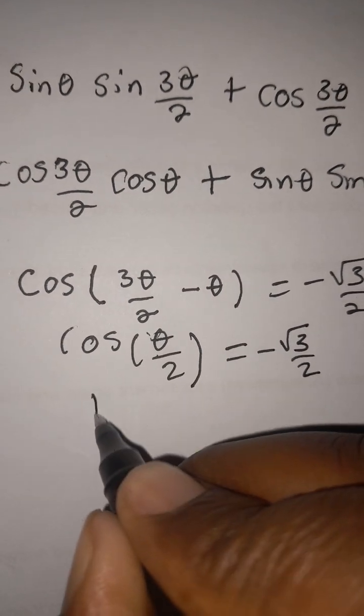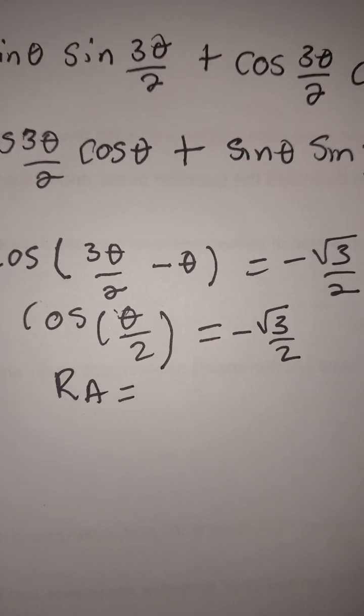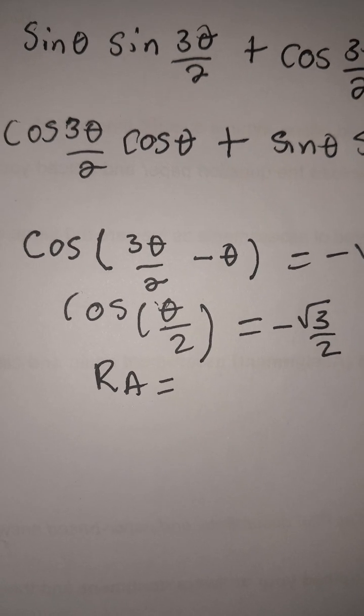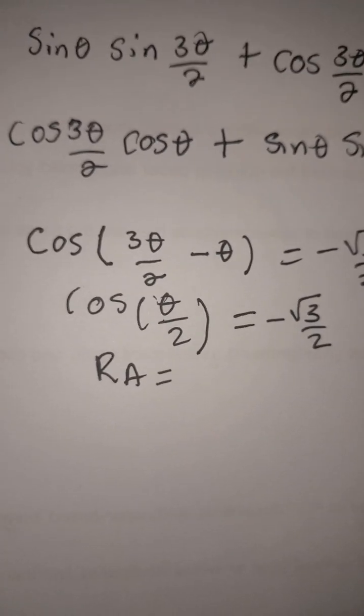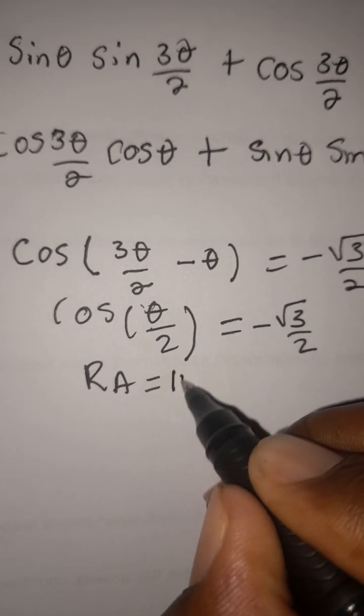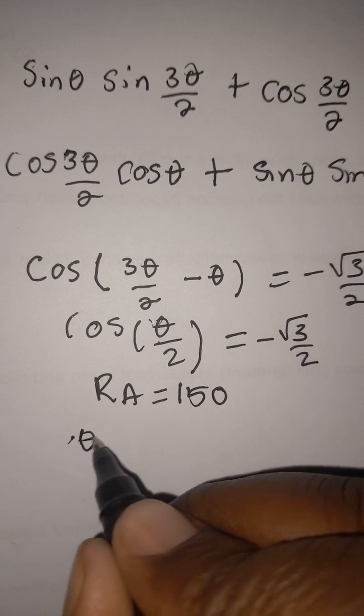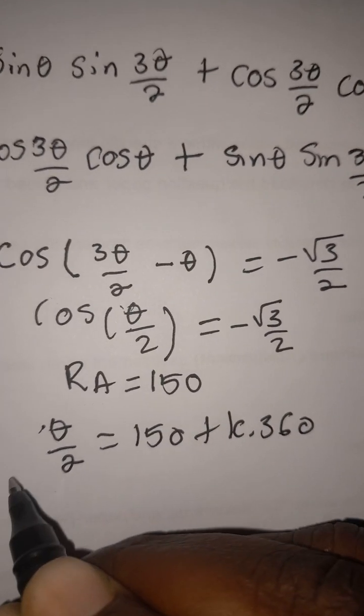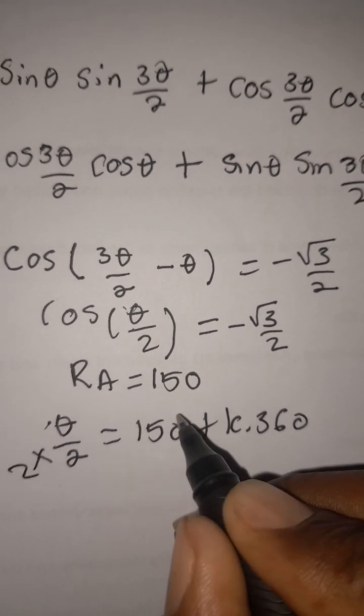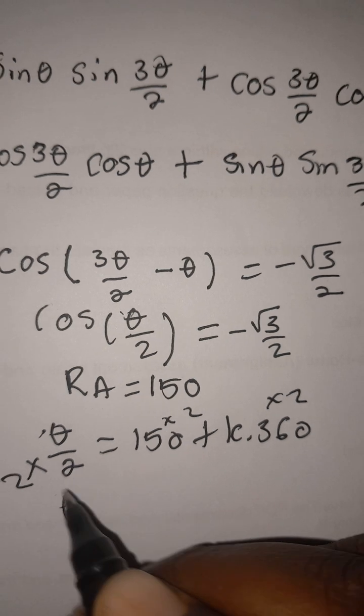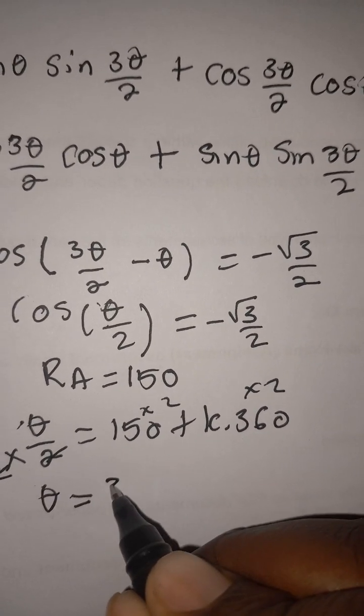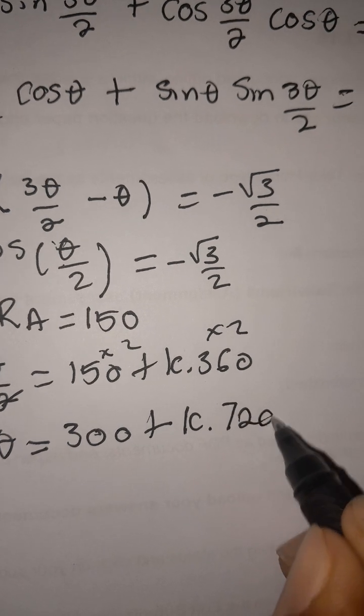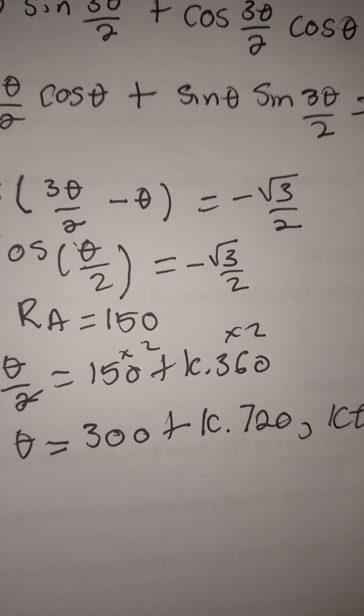Let's look for the reference angle. Punch in your calculator second function of negative √3 over 2. We get 150, so our reference angle is 150. In other words, θ/2 equals 150 plus k times 360. We will multiply everything by 2 to make theta the subject. So we're left with theta equals 300 plus 720k, where k is an element of integers. That's the first solution.